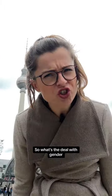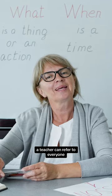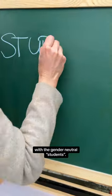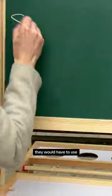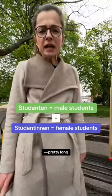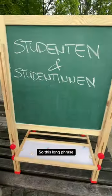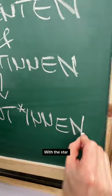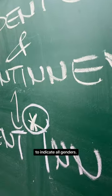So what's the deal with gender in the German language anyways? In English, a teacher can refer to everyone with a gender-neutral word like 'student.' But in German, they would have to use 'Studenten und Studentinnen' — pretty long, and it excludes non-binary people. So this long phrase becomes 'Studentinnen*' with a star to indicate all genders.